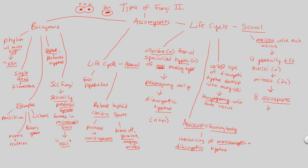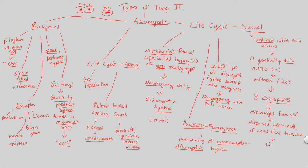Once those 8 ascospores have been made, they will eventually be discharged and released from the asci upon their maturation. Once that has happened, they will be released into the air and dispersed. If they're dispersed, they will hopefully germinate somewhere with a nice environment — moist with food — and if conditions are favorable, we will have successful growth.